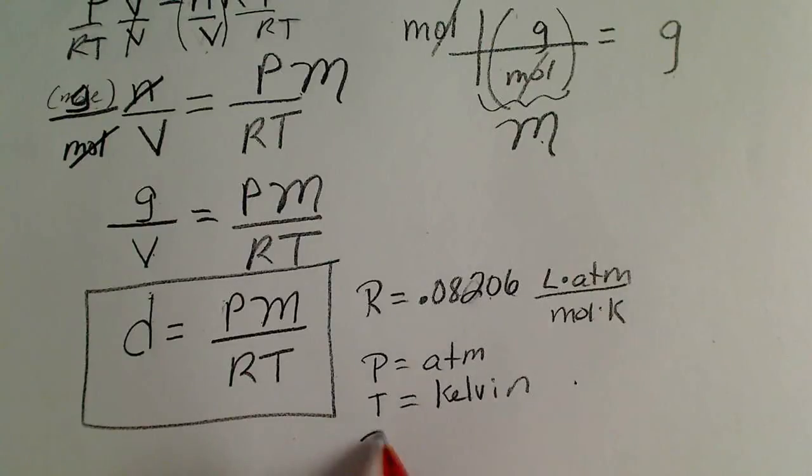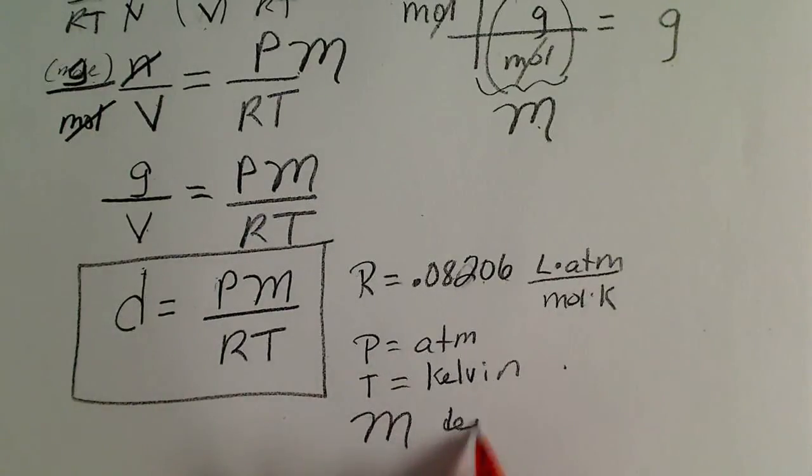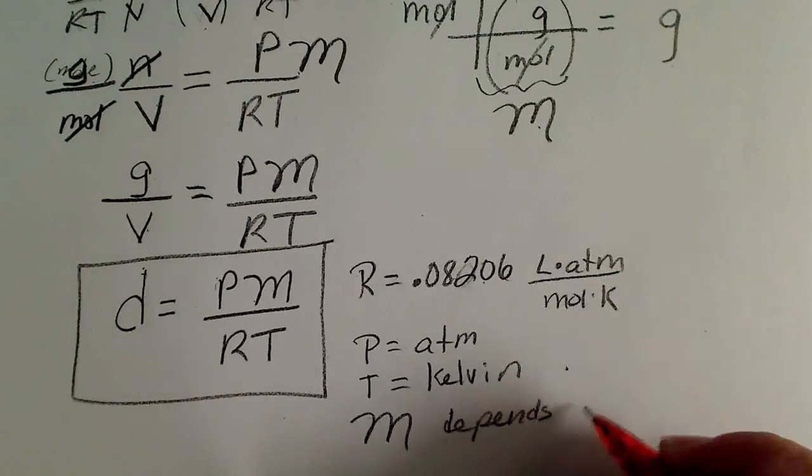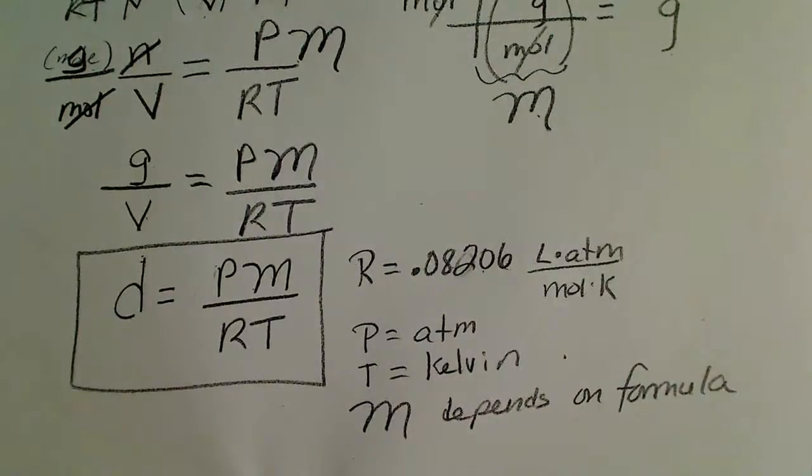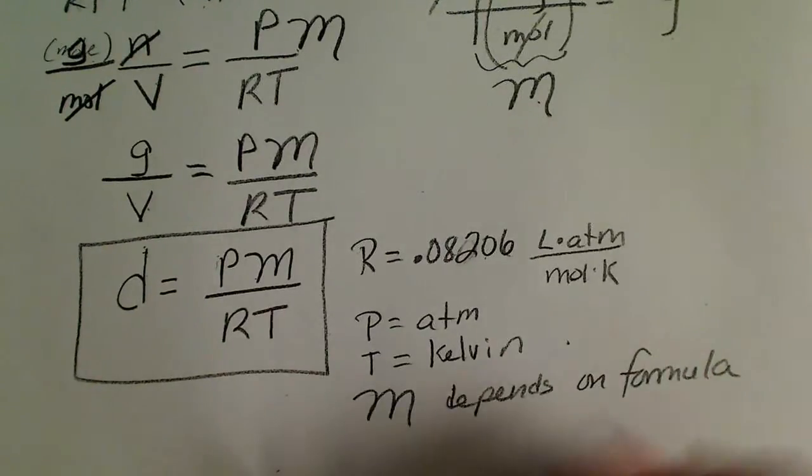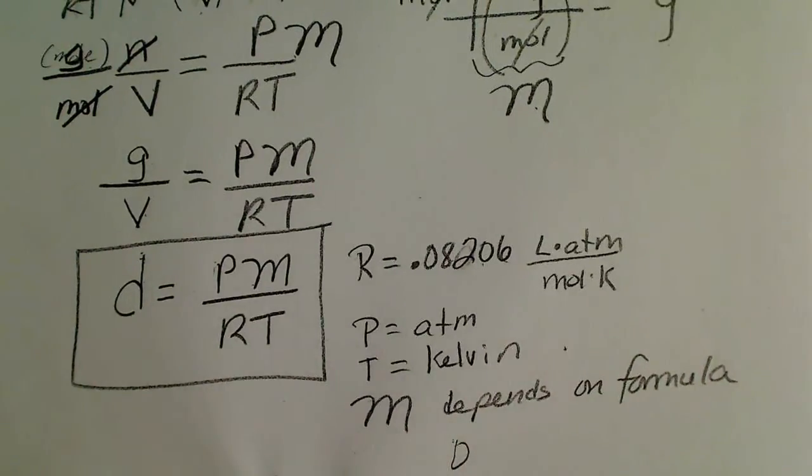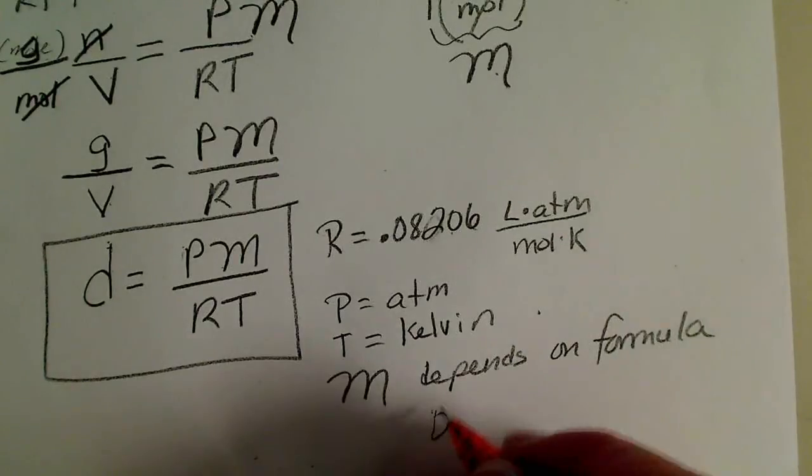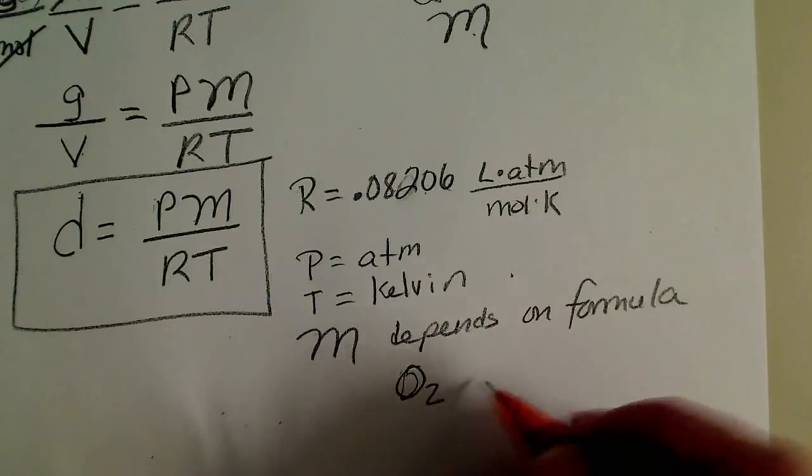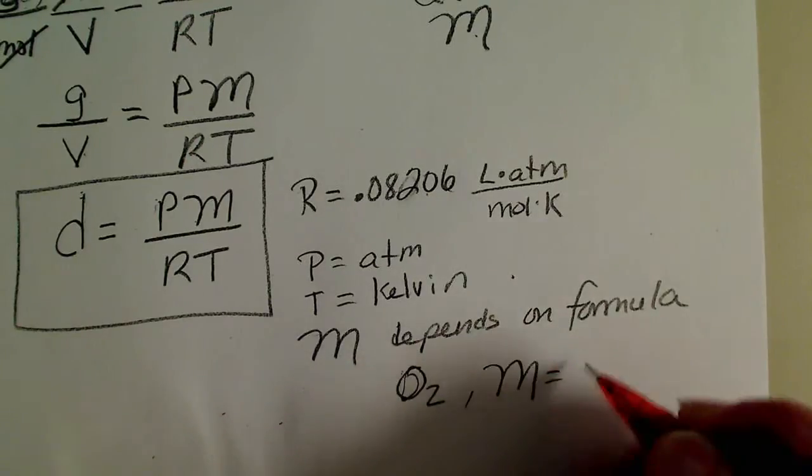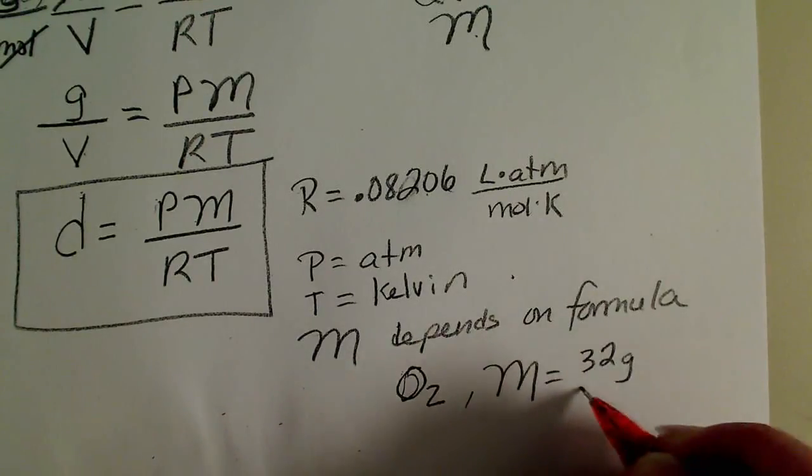And then the molar mass, of course, depends on the formula. And so whatever gas we are looking at, for example, if it's oxygen, O2 for oxygen, then the molar mass would be 32 grams per mole.